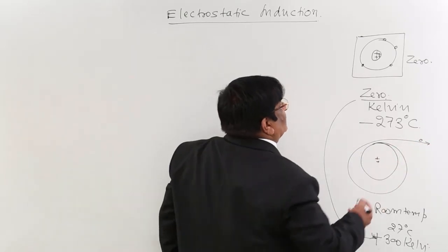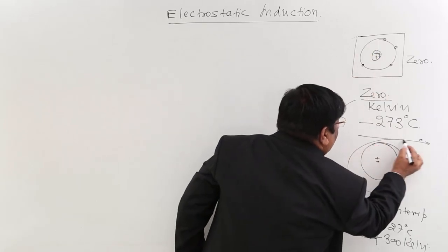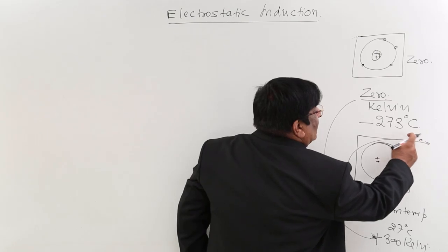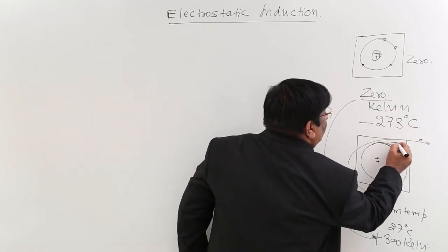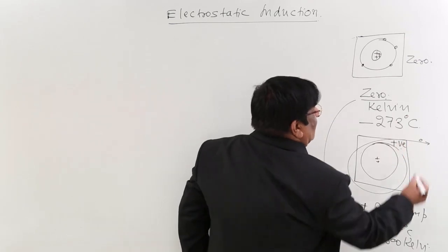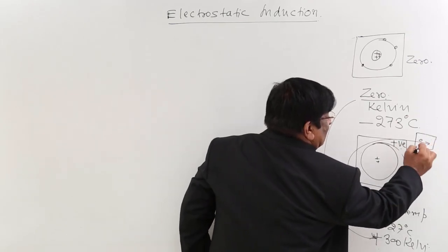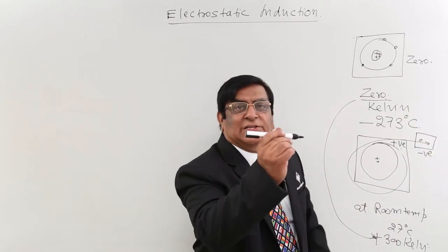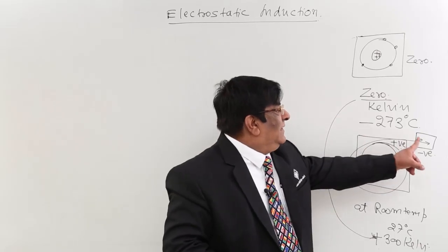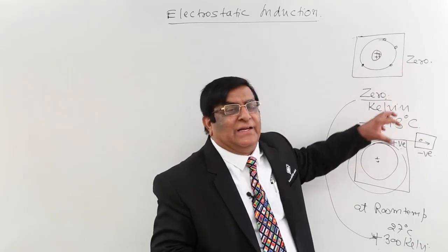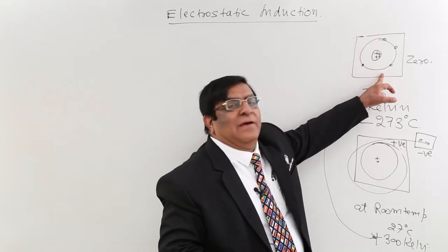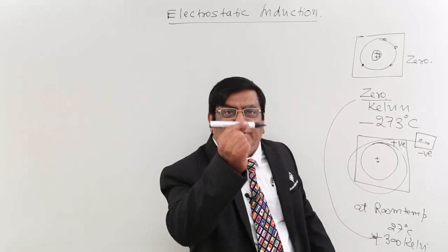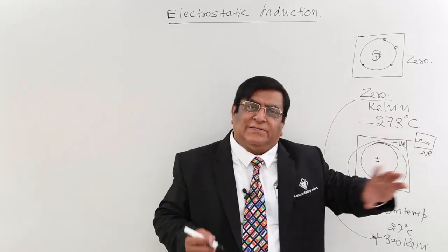When they go out, one atom becomes two particles. This particle has one electron less, so we call it a positive charge particle. And this electron is another entity — a negatively charged particle. So now in this body we have one positive charge particle and one negatively charged particle.